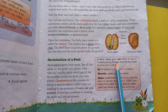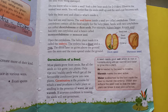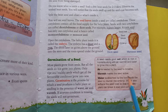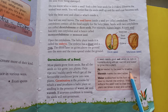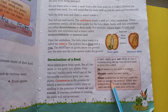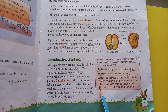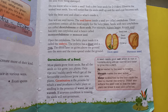A seed needs good soil which is rich in nutrients, along with air, warmth, and water to grow into a plant. Water is absorbed by the food inside the seed to nourish the embryo. Water also softens the seed coat so that the baby plant can break it open and come out.